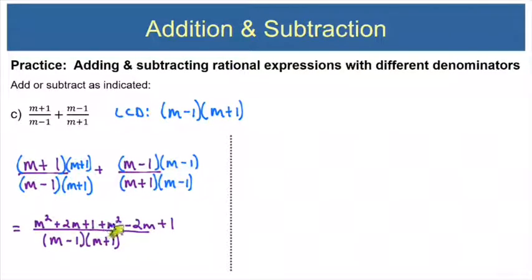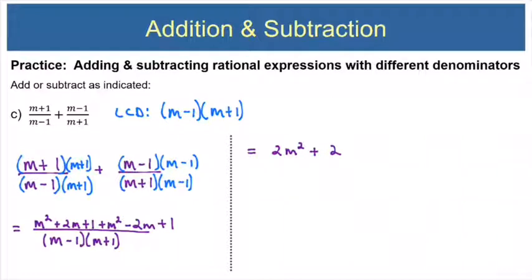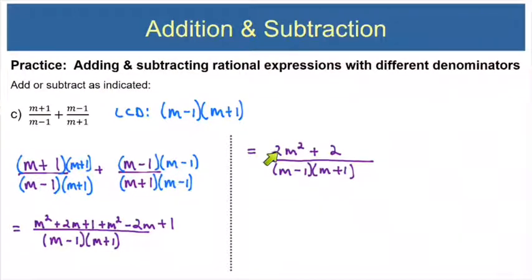Now let's combine like terms in the top. 1m squared plus 1m squared is 2m squared. Then positive 2m and minus 2m cancel out, so we have no m term at all. And 1 plus 1 makes 2. So the numerator is 2m squared plus 2 and the denominator is m minus 1 times m plus 1. We could factor a GCF of 2 from the top, giving us 2 times m squared plus 1 — but m squared plus 1 cannot cancel anything from the denominator, so it's not helpful and we're not required to do it. This is our final answer.